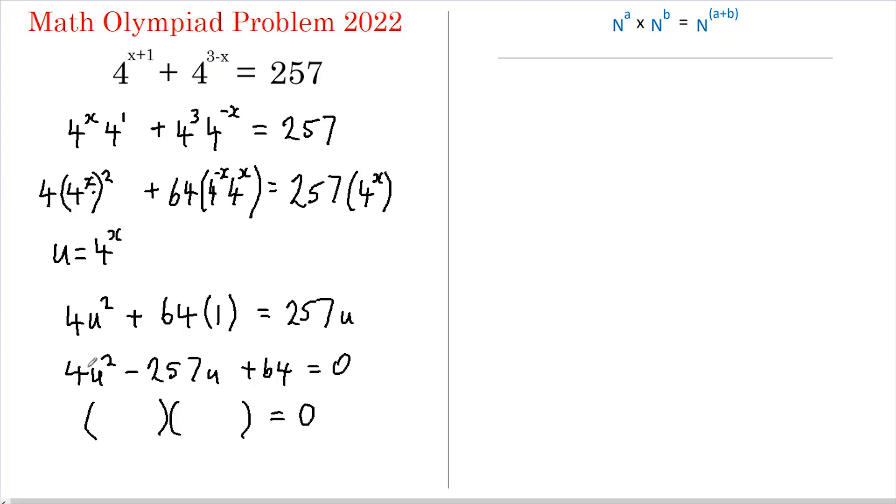So 4 times 64 is 256, that's only 1 away from our 257. So let's put the 4u here and the u here, and we want to multiply this 4 by 64 so we put the 64 over here. That leaves 1 to go in there. Now these numbers are going to multiply to give you a positive but add to give you a negative so they've both got to be negative.